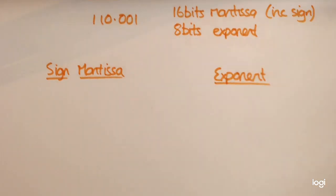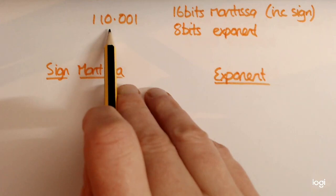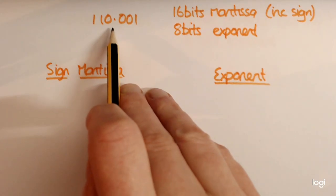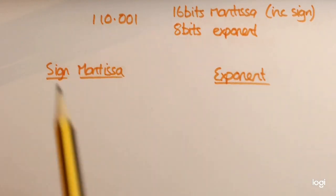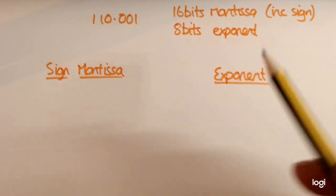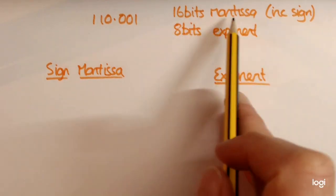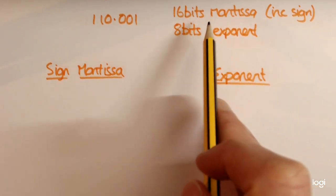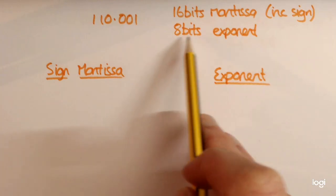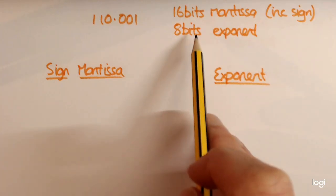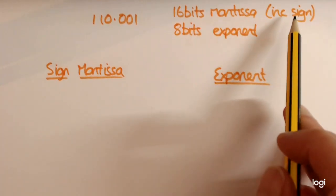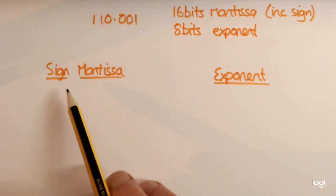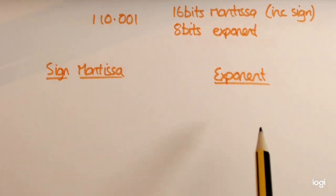This is the first of four questions. We're looking at converting a binary number with a real number to floating point representation. We're going to have 16 bits for the mantissa and 8 bits for the exponent. This 16 bits includes the sign bit, so in reality it's 1 bit for the sign and 15 bits for the mantissa.